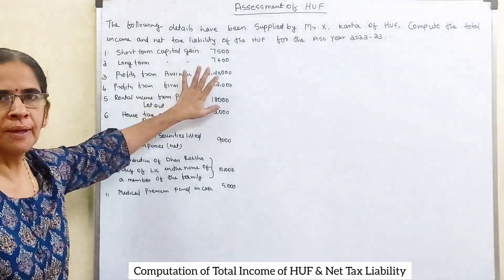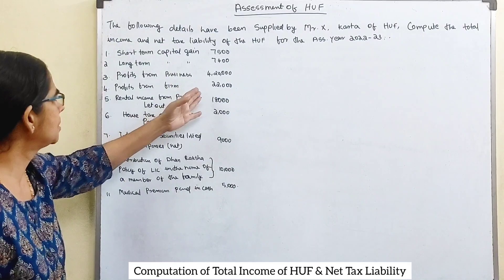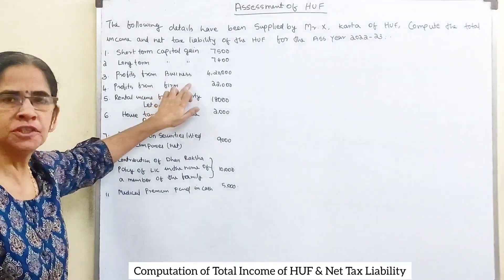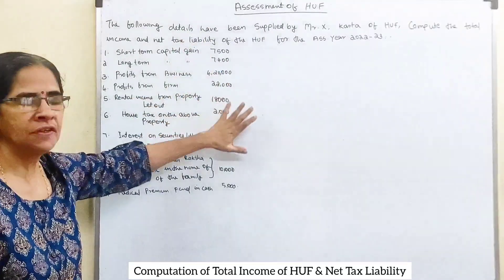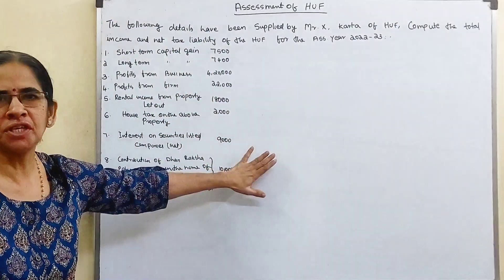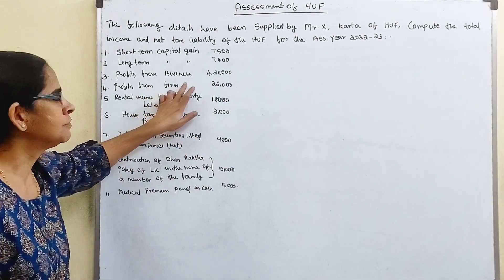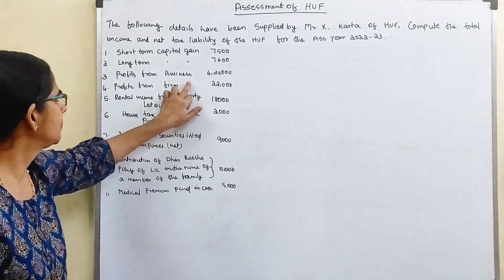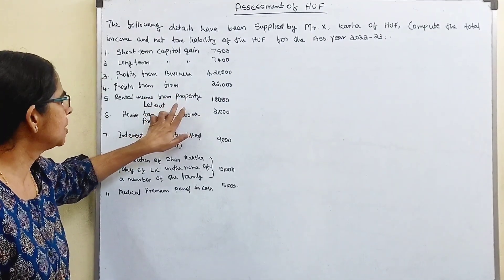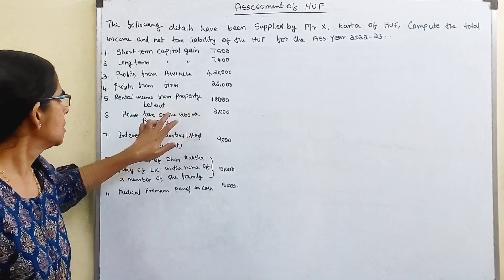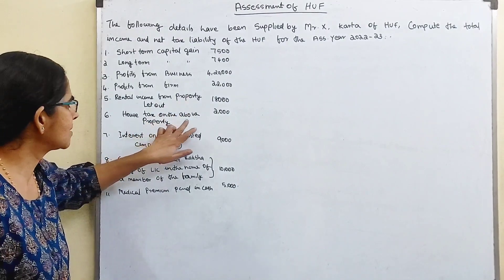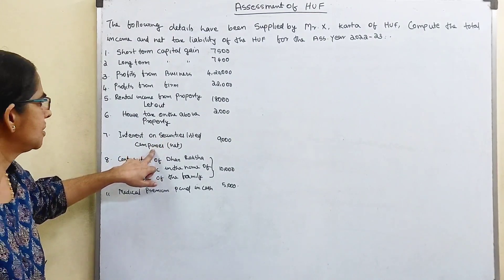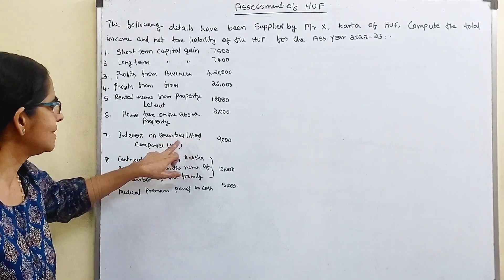We will look at short-term capital and long-term capital, profit from business, and profit from firm. If we are H.U.F., we are going to compute it. Profit from firm, we are going to accept it. Then, rented income from the house property. How it stands on the house property. Interest on securities — listed companies.